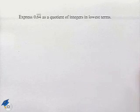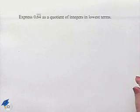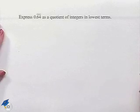This time, we're going to look at taking a decimal representation and changing it into a fractional one. Express 0.64, where the 64 repeats, as a quotient of integers in lowest terms.